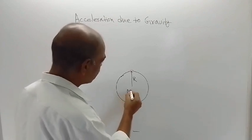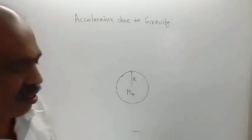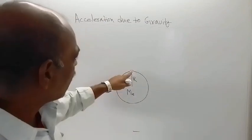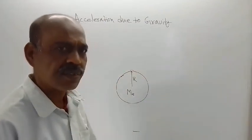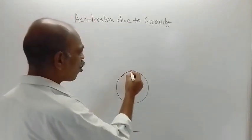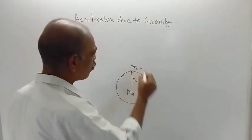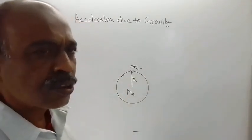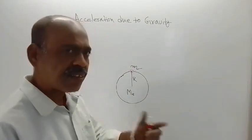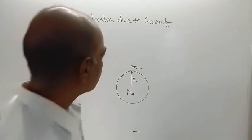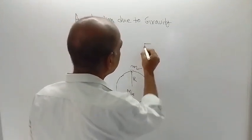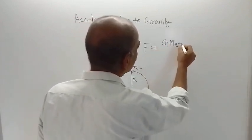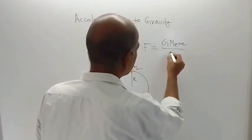The mass of earth is taken as M with suffix E, where E stands for Earth. This is the center, this is the radius of the earth, and this is a small object kept on the surface of the earth. The mass of this small object is small m. Therefore, the force of attraction on the small object exerted by the planet Earth is F, equal to G·Mₑ·m divided by r².